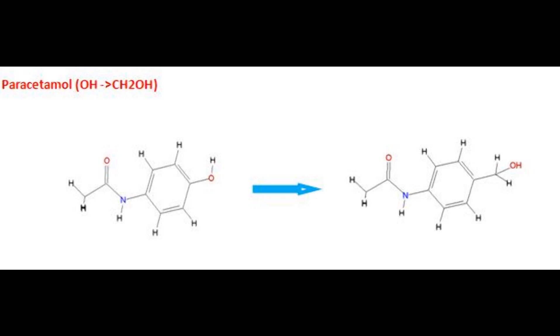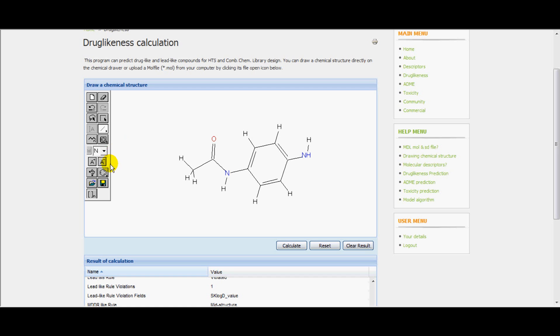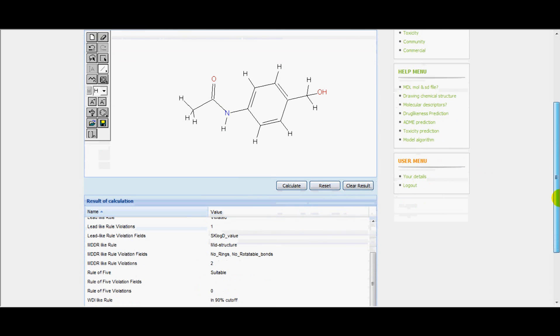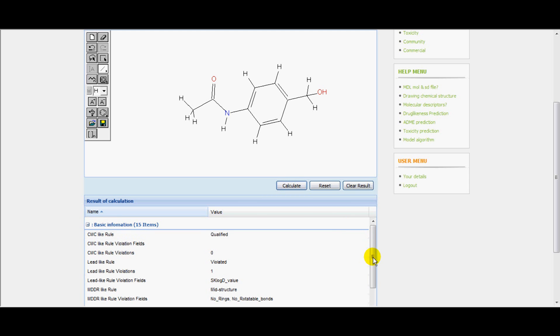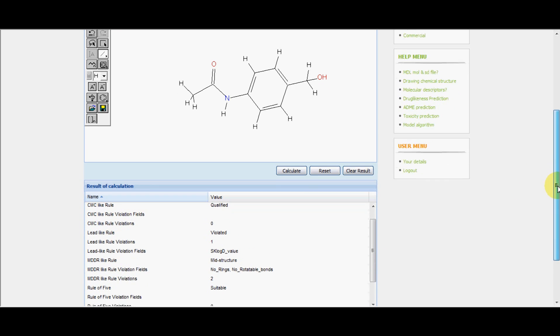Next replace the OH group with CH2OH group. Calculate the prediction. Lead-like and MDDR rules have violations. Copy the result to the document.